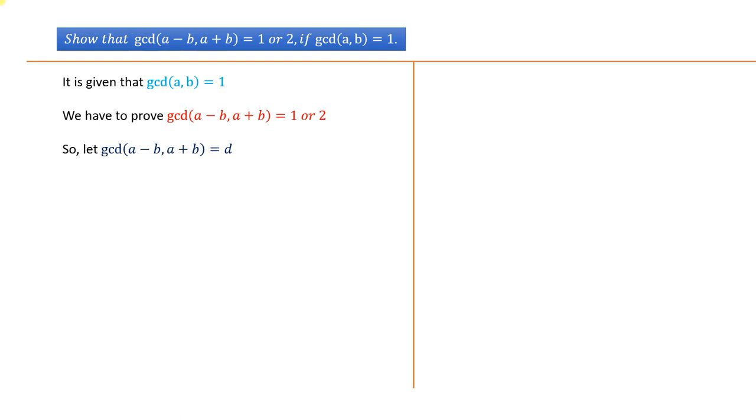This implies d divides (a - b) and (a + b) both. There exist integers m and n such that (a + b) = m × d and (a - b) = n × d.